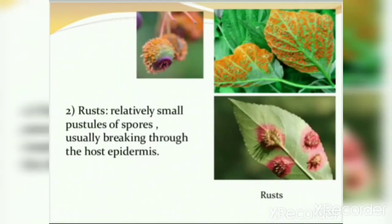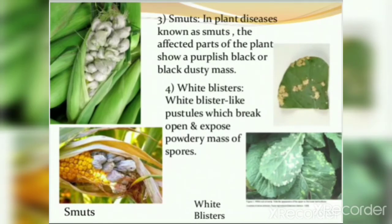The second fungal symptom is rust. When you touch a rusted surface you can see spores on your hands. Rust appears as relatively small pustules of spores, usually breaking through the host epidermis. Third is smut — the affected part of the plant shows a purplish-black or black dusty mass, as seen in corn. Fourth is white blisters, seen in mustard — also a pustule that breaks open to expose a powdery mass of spores.